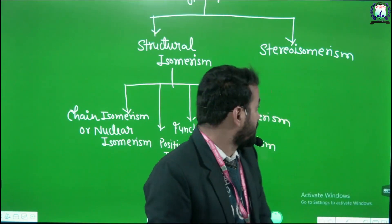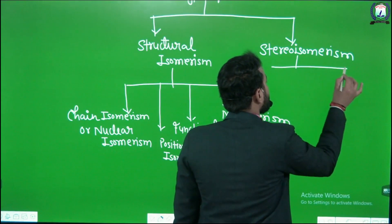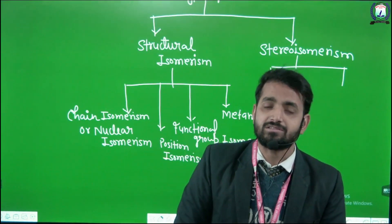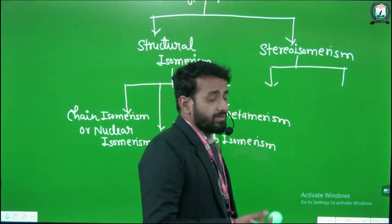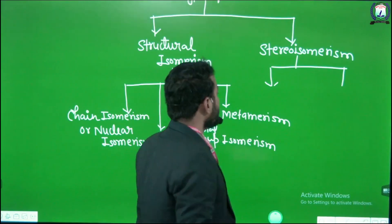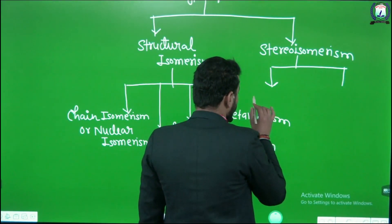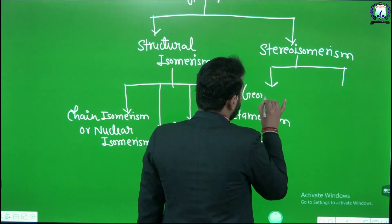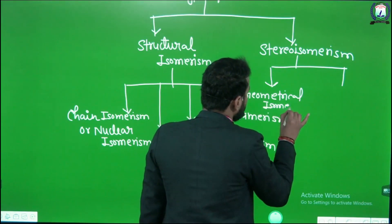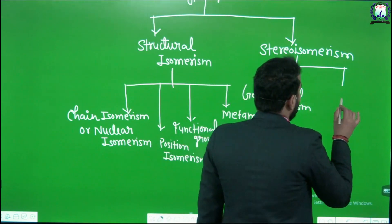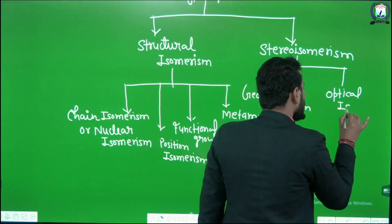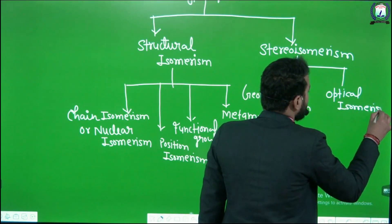Regarding stereoisomerism: geometrical isomerism will be discussed in the hydrocarbon chapter, and optical isomerism will be discussed in Class 12th standard. There are two types of stereoisomerism — first is geometrical isomerism and second is optical isomerism.